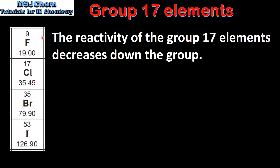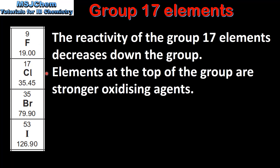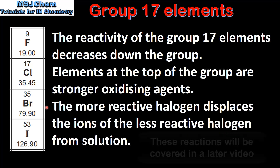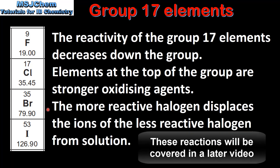Finally we look at the reactivity. The reactivity of the group 17 elements decreases down the group. Out of these 4 group 17 elements, Fluorine is the most reactive and Iodine is the least reactive. Elements at the top of the group are stronger oxidizing agents. When reacted together, the more reactive halogen displaces the ions of the less reactive halogen from solution.